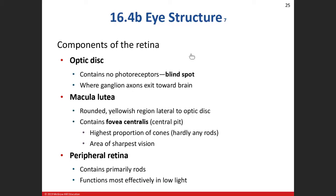On the retina you'll notice a structure called the optic disc, otherwise known as the blind spot. It's the blind spot because there are no photoreceptors there — light cannot stimulate anything at that location. All ganglion axons converge at the optic disc and exit the eyeball as the optic nerve heading toward the brain.